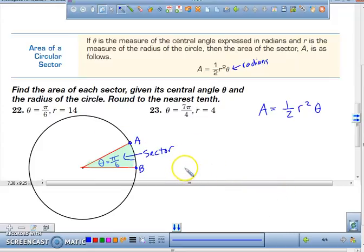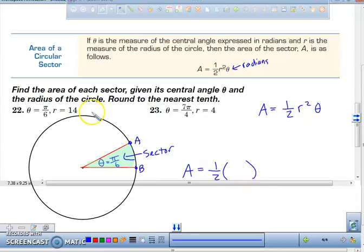All we have to do is do what? Take that half of our radius. What's our radius in this particular case? 14. Square it and then multiply it by what? Pi over 6. And that will give you your approximate value for the area of the sector.